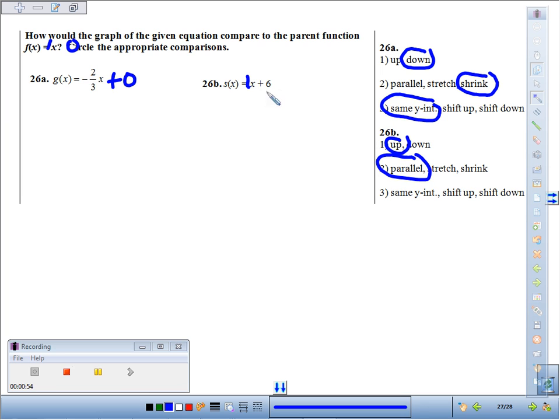This has a y-intercept of six where the parent function has a y-intercept of zero, so this would be six units up—a vertical shift up six units.